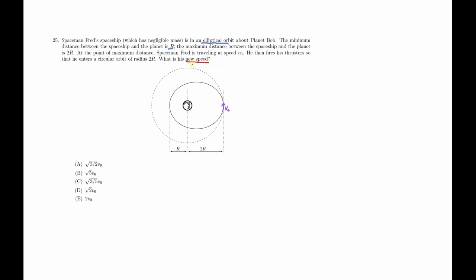You need to be familiar with several concepts here. First, Newton's second law of motion: F = ma. Also circular motion, especially centripetal acceleration, because we want to enter the bigger circular orbit — by definition, a_c equals tangential velocity squared over r. You also need to know the gravitational force: F = G times mass one times mass two, for our case the mass of planet Bob and the spacecraft, divided by r squared.